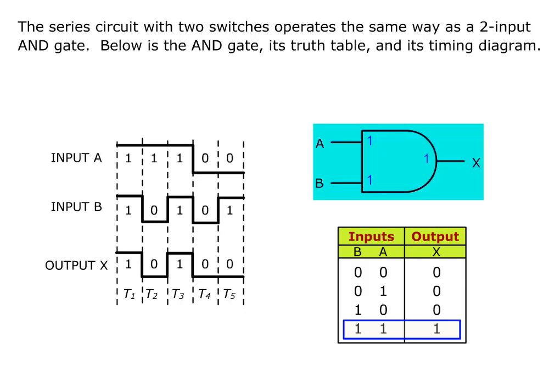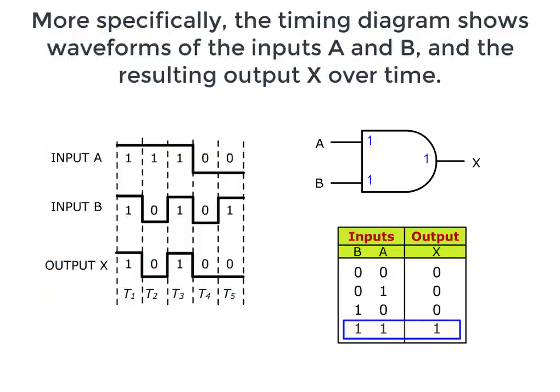Below is the AND gate, its truth table, and its timing diagram. More specifically, the timing diagram shows waveforms of the inputs A and B and the resulting output X over time.